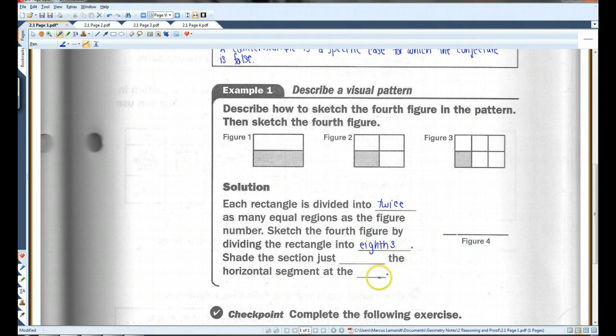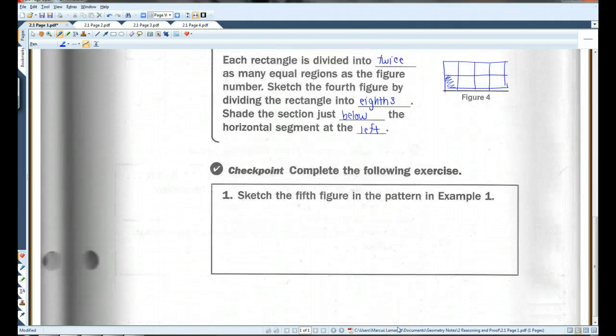Something like this. It doesn't have to be beautiful. Now, also notice that in each of the figures, the lower left-hand square is shaded. So, in this case, it would be this one. So, I'm going to shade the section just below the horizontal segment at the left.